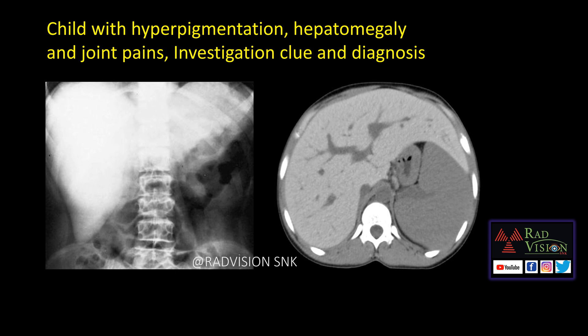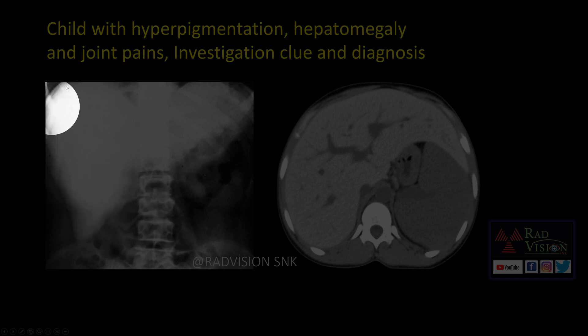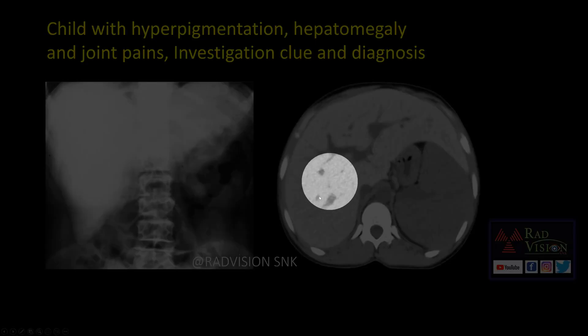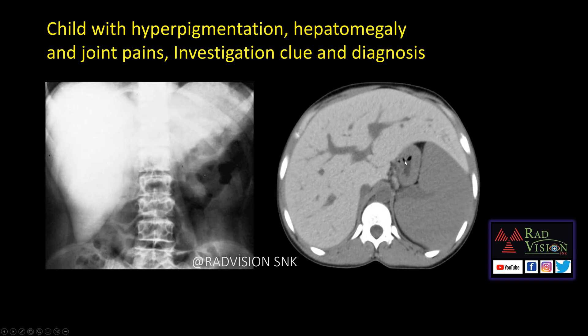Next case: a child with hyperpigmentation, hepatomegaly, and joint pains. We can come to a conclusion based on history. You can see the liver is very hyperdense and radiodense on the plain scan, with the liver outline clearly visible. When compared to the splenic Hounsfield unit values, the liver HU is raised — this is hyperdense liver on plain CT.